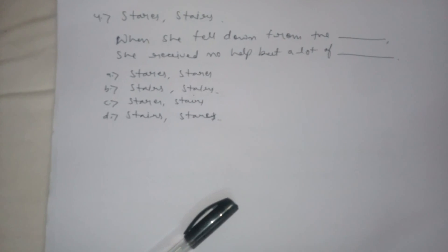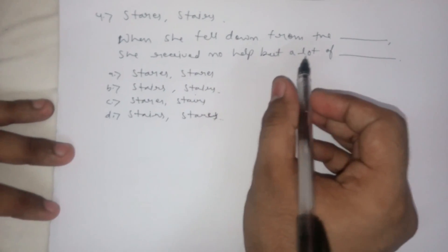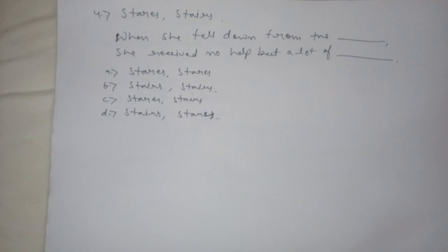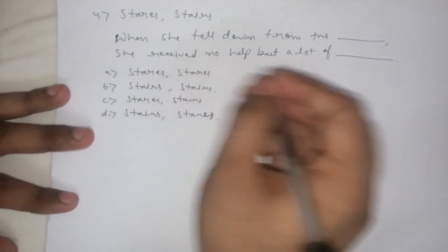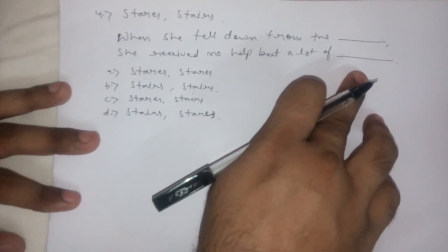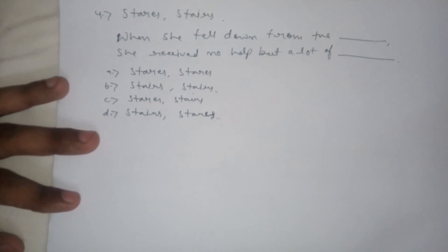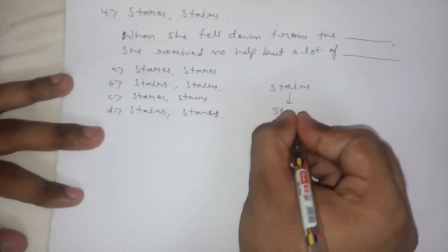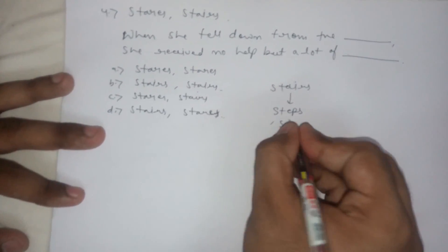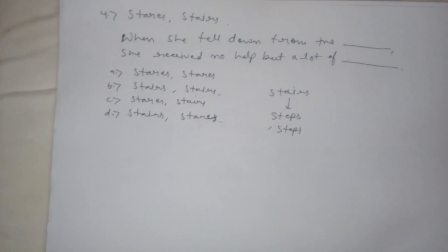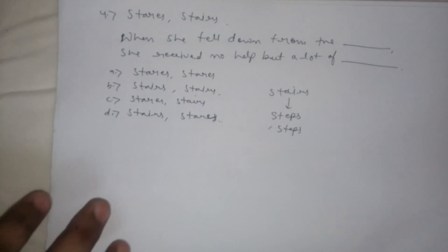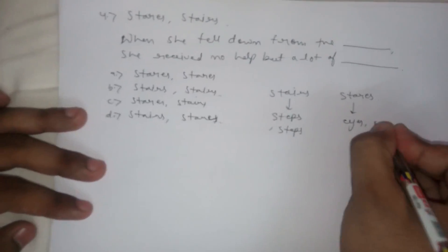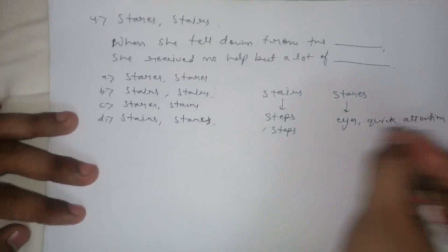'Stares' refers to the eyes of people — the quick looks or glances that people give. 'Stairs' (s-t-a-i-r-s) refers to the steps of a building — the passage from one floor to another. 'Stares' (s-t-a-r-e-s) refers to the quick attention or glances from people.